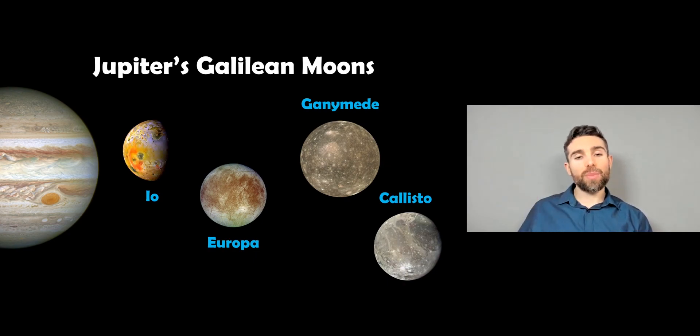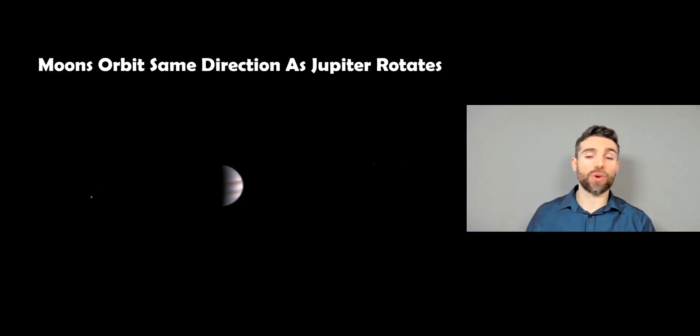So the main moons of Jupiter are the Galilean moons. You've got Io, Europa, Ganymede, and Callisto. These orbit fairly close to Jupiter. They also orbit in the same direction that the planet rotates. So we would call these prograde moons because they're going the same way that the planet rotates.